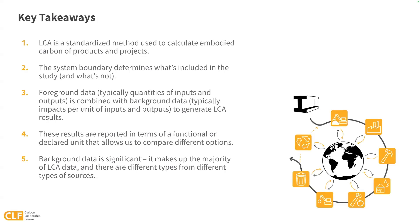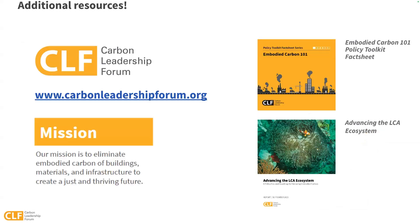Key takeaways: LCA is a standardized method used to calculate embodied carbon. The system boundary determines what's included in the study. Foreground data is combined with background data to generate LCA results. These results are reported in terms of a functional or declared unit that allows us to compare different options. And background data is significant. There are lots of additional resources on the CLF website, including policy toolkits, research reports, and ways to connect with others interested in reducing embodied carbon. The Embodied Carbon 101 Policy Toolkit Fact Sheet provides more introductory information, and the Advancing the LCA Ecosystem Report is a deep dive on LCA and policy. Thank you for attending this module, and make sure to check out the other videos in this series.